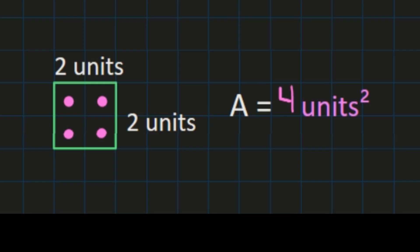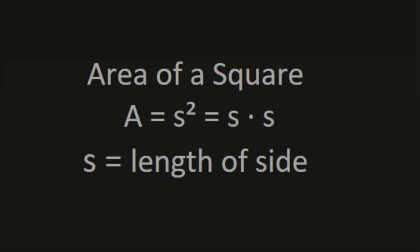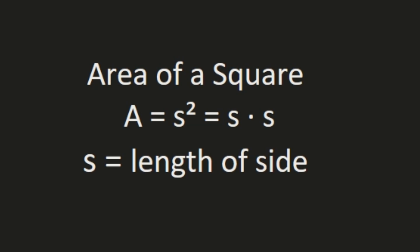However most of the time you're going to want to use the formula to find the area of a square. The formula for finding the area of a square is area equals s squared where s is the length of the sides. Remember side squared will be the same calculation as side times side. Let's go back to our example and solve it using the formula.